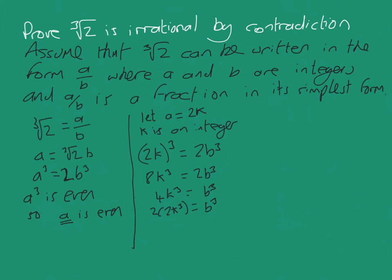4k cubed equals b cubed. Well, that's 2 lots of 2k cubed equals b cubed. Oh, what does that tell me? Well, it tells me, if I write it more neatly, that b cubed is even.